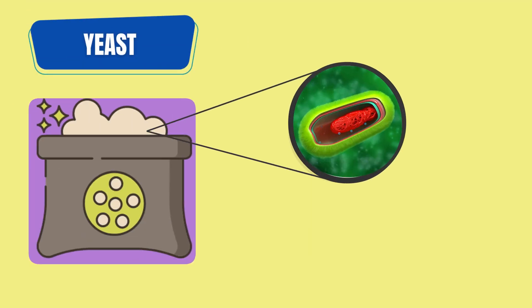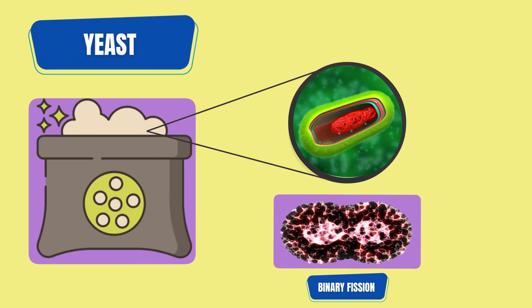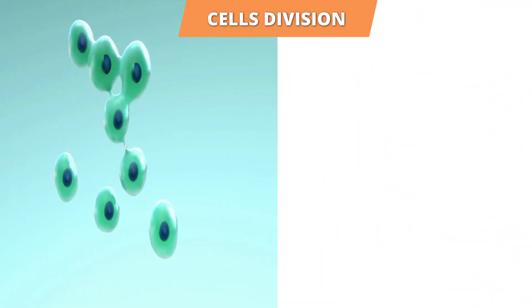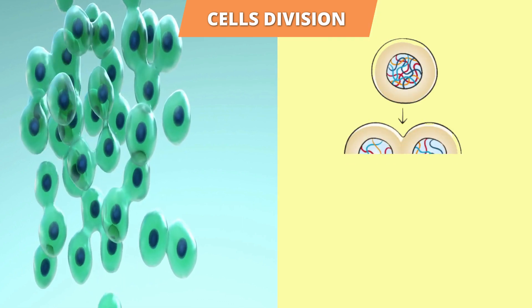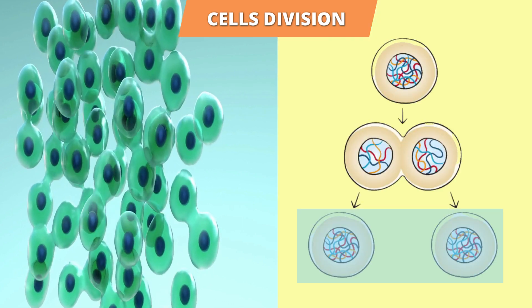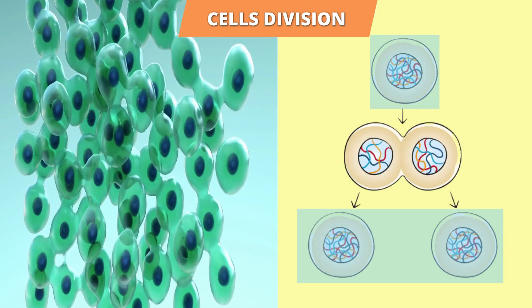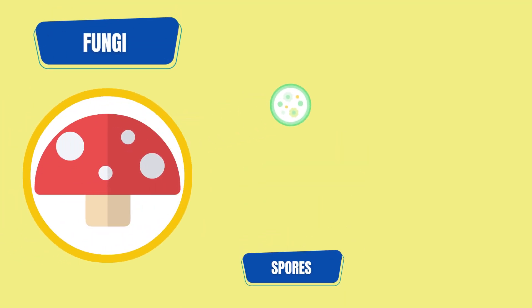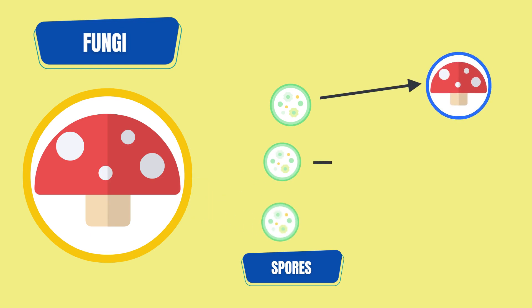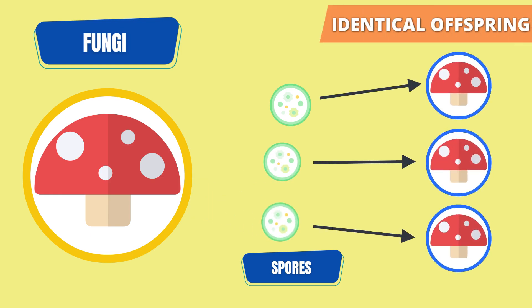For example, prokaryotic bacteria and yeast can reproduce asexually through binary fission. This is where the cell first makes a copy of its DNA, and then splits forming two identical cells, so the daughter cell has an exact copy of the DNA as the parent cell. Eukaryotic organisms like fungi release spores which contain a copy of the parent's DNA. These spores grow into identical offspring of the parent.